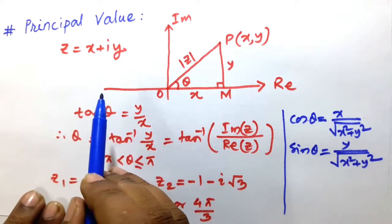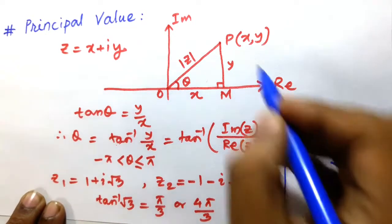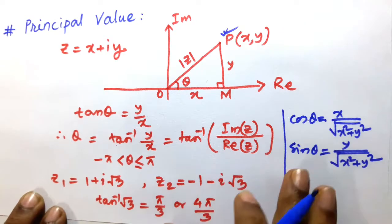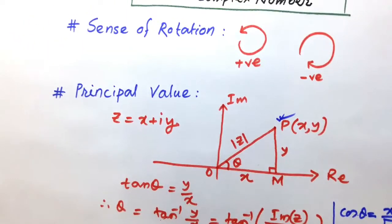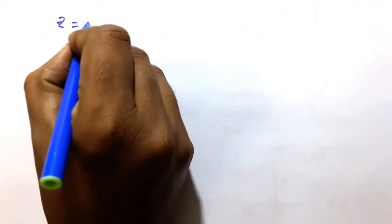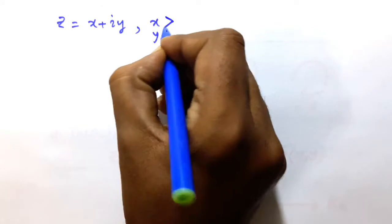The argument of z depends upon the quadrant in which the point P lies. Now let us consider the first quadrant. In the first quadrant, both x and y are positive, so z = x + iy where x > 0 and y > 0.